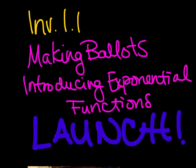Welcome to Investigation 1.1. In this investigation, we're going to be looking at exponential growth. We're going to be talking about making ballots. Essentially, we are cutting something in half, and then cutting both of those things in half, and then all of those things in half. What would we end up getting? We'll find an exponential growth model — here's the introduction to this whole concept.